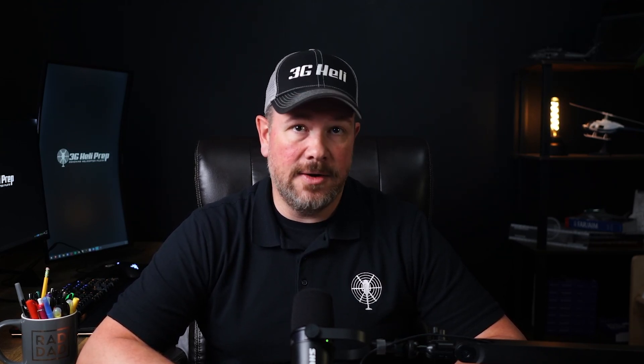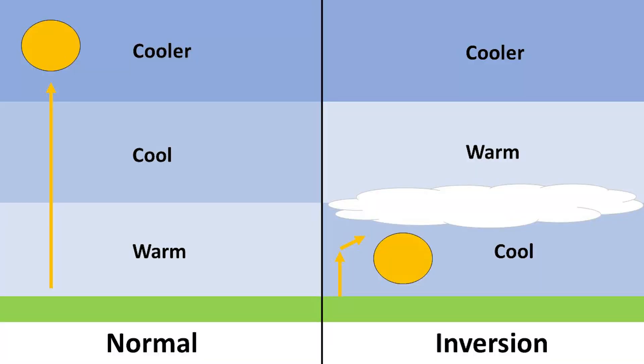There is something called the environmental or actual lapse rate. This is the actual rate at which temperature decreases with altitude in the real atmosphere. It can vary depending on weather conditions, time of day, and location. In some situations, the temperature might decrease faster or slower than the standard lapse rate, or it might even increase with altitude — a condition known as a temperature inversion.